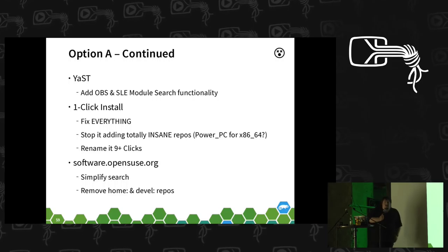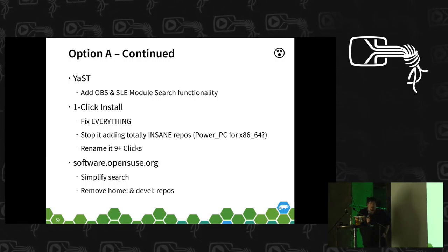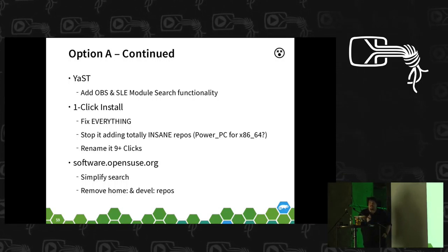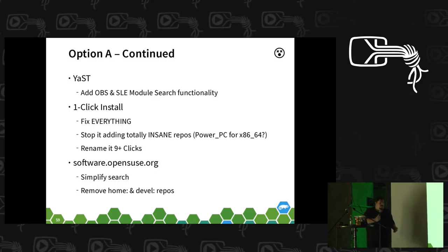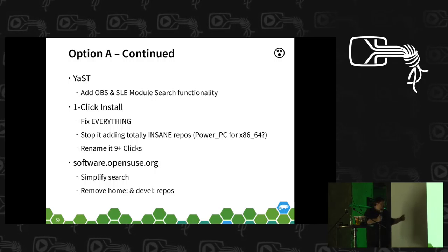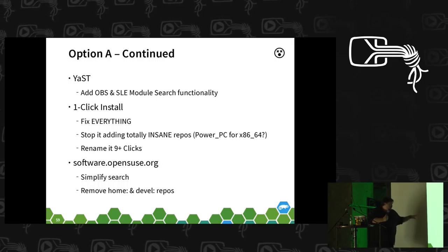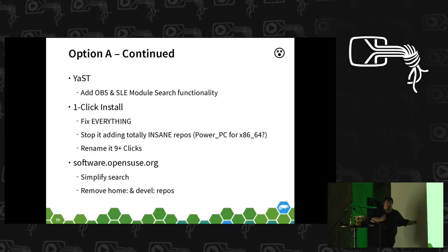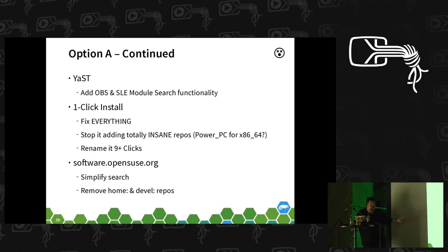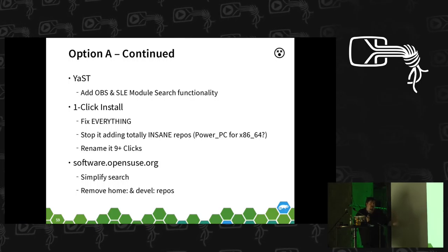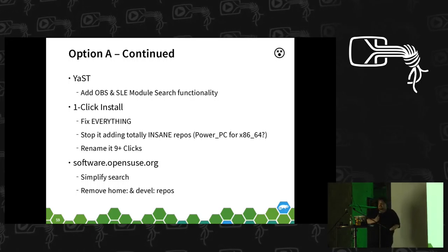On software.opensuse.org search, this has already started moving because we had the workshop on Thursday. We already have people looking at software.opensuse.org, tidying it up and simplifying it. We really should be removing home repos and develop repos, or making them incredibly hard to find and making it incredibly obvious that you should be using the distribution first.